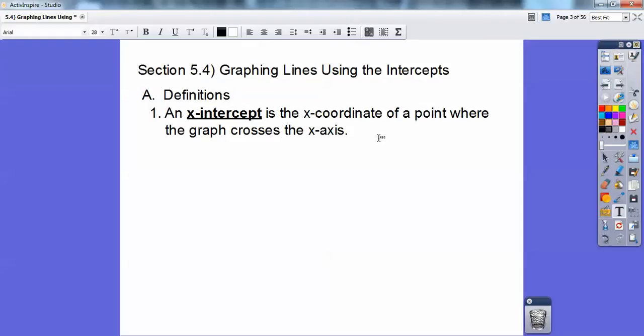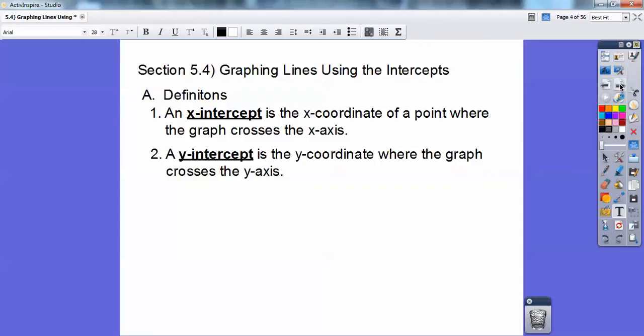An x-intercept is the x-coordinate of a point where the graph crosses the x-axis. So it's the x-coordinate where the graph crosses the x-axis. And then a y-intercept is where it crosses the y-axis. I'll show you an example in just a second.